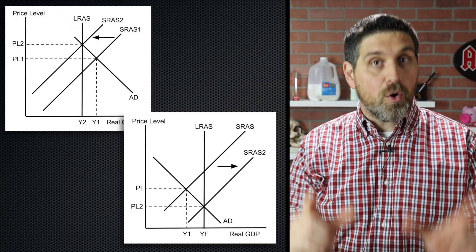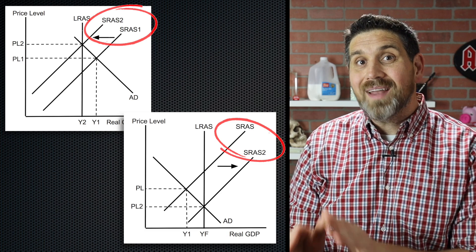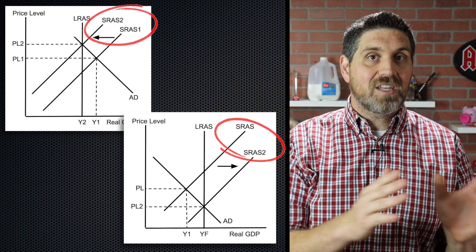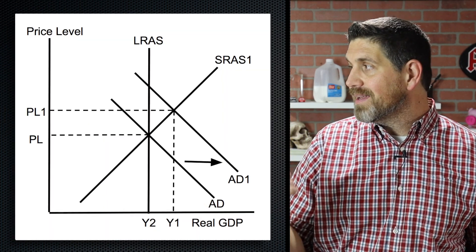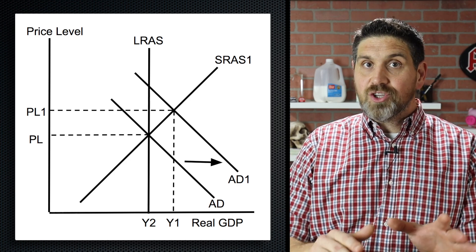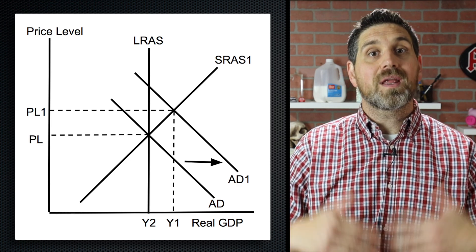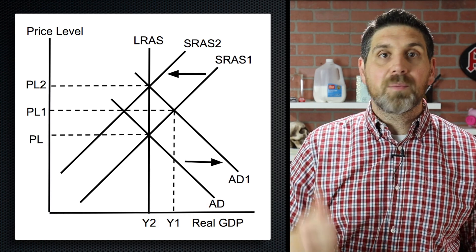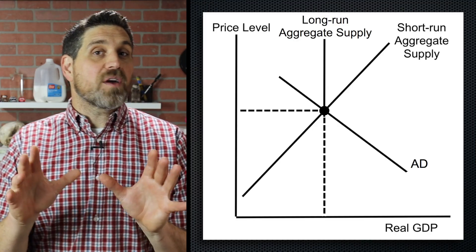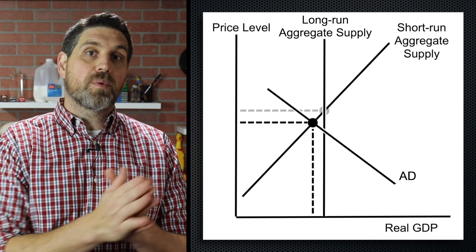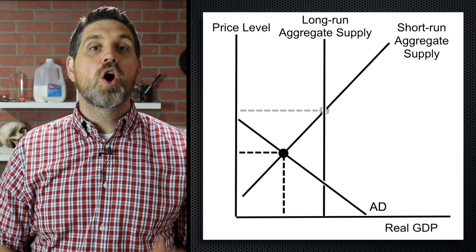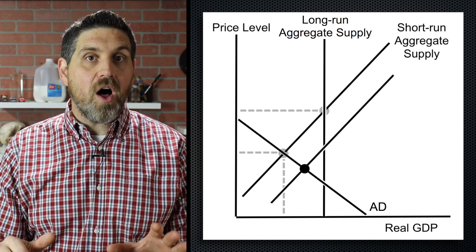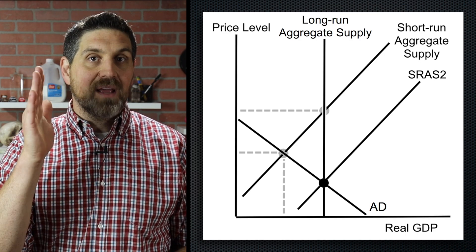Going back to the graph, notice when we talk about self-adjustment, we're talking about the short run aggregate supply shifting — not the demand curve. The demand curve isn't moving. So if the economy is at full employment and there's an increase in consumer spending, that would lead to a positive output gap. But eventually wages and resource prices would increase, so the short run aggregate supply would shift to the left, putting us back at full employment. And if we're at full employment and there's a decrease in consumer spending, that would lead to a recession and a negative output gap. Eventually, over time, theoretically, wages and resource prices would fall, short run aggregate supply would increase and shift to the right, putting us back at the long run — no policy required.